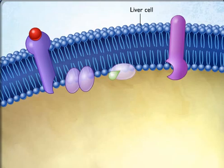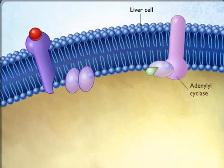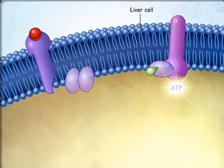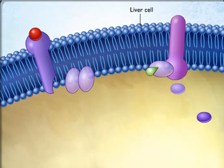The activated G protein subunit then diffuses within the plasma membrane until it encounters adenylyl cyclase, a membrane enzyme that is inactive until it interacts with the G protein subunit. When activated by the G protein subunit, adenylyl cyclase catalyzes the formation of cAMP from ATP.